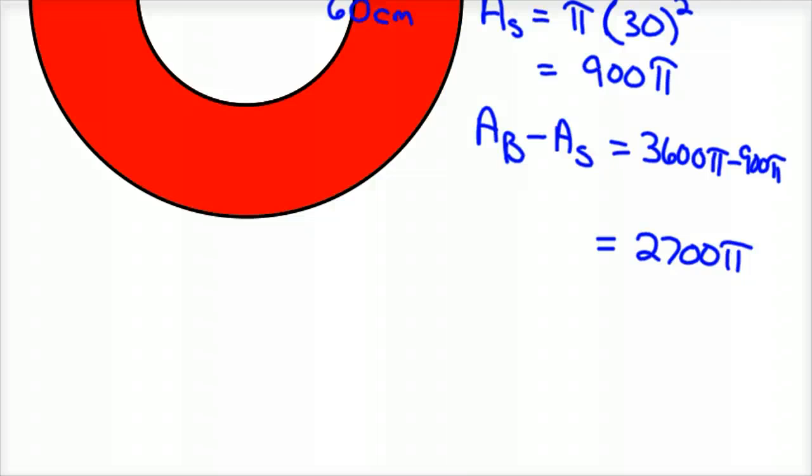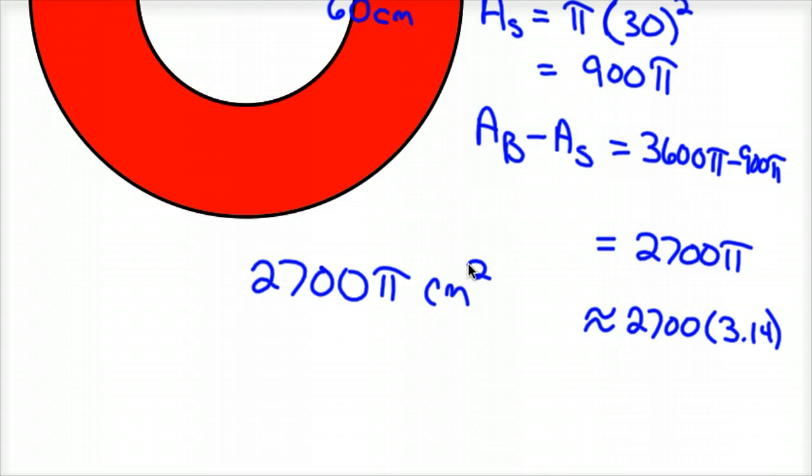And you could go ahead then and approximate it if you wanted to. So 2700 times 3.14, it just depends. You could use 22 sevenths for π, whatever you need to approximate π as. And that is the area in square centimeters. So 2700π, I'm not going to do that. I think pretty much everybody can multiply two numbers together. So 2700π centimeters squared, in this case, would be that.